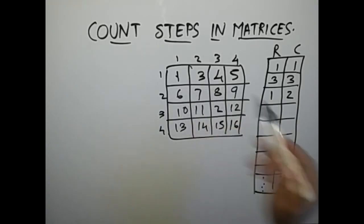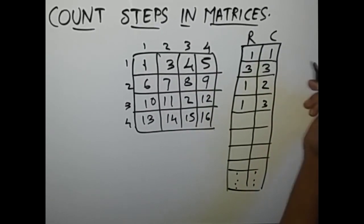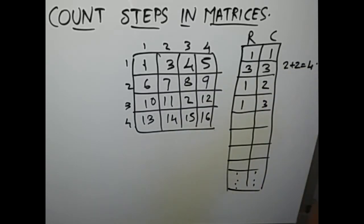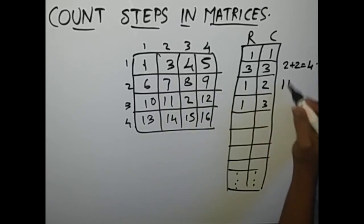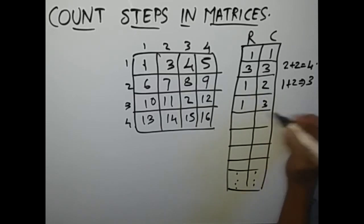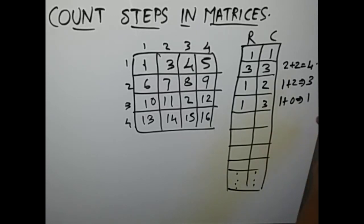Element 4 is stored at row 1, column 3, so we store 1, 3. This continues for all elements. Then all we have to do is find the absolute difference between adjacent rows in this array — like 3 minus 1 is 2, and 3 minus 1 is 2, so we add to get 4. We store each result in a sum variable. At the end, we add all these values to get the total number of moves required.